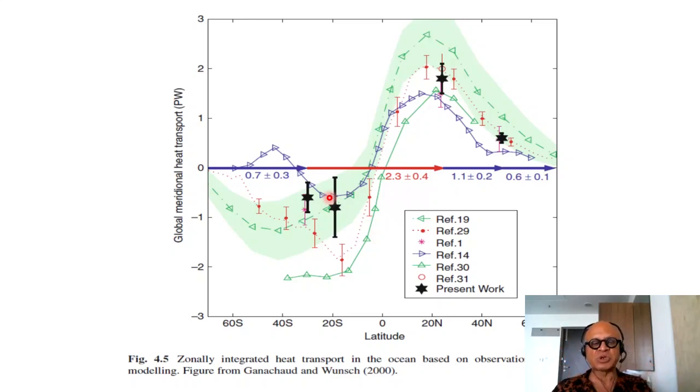So inverse modeling basically takes the data that is well constrained and tries to estimate the transport that can produce the observed temperature and salinity, for example. Okay, so zonally integrated heat transport in the ocean based on observations and inverse modeling. So this figure is from Ganachaud and Wunsch, so they call this the present work there.